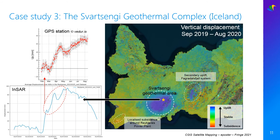In early 2020, a strong uplift was observed over the Svartsengi geothermal field. As you can see on the graphs showing vertical displacement from InSAR and GPS, short episodes of subsidence were recorded during the overall uplift period. Even though the origin of that uplift is still unclear, it seems to be more likely related to geothermal activity than magmatic activity. Indeed, the opening of cracks increased fluid flows, but no chemical changes were observed in the geothermal system.